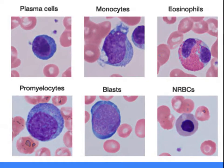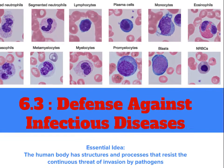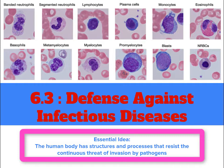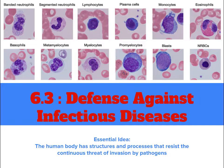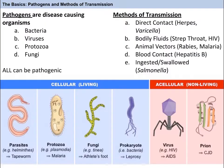So welcome to 6.3, Defense Against Infectious Diseases. The essential idea is that the human body has structures and processes that resist the continuous threat of invasion by pathogens. So let's learn more about our lean-mean pathogen-fighting machine we call the immune system.